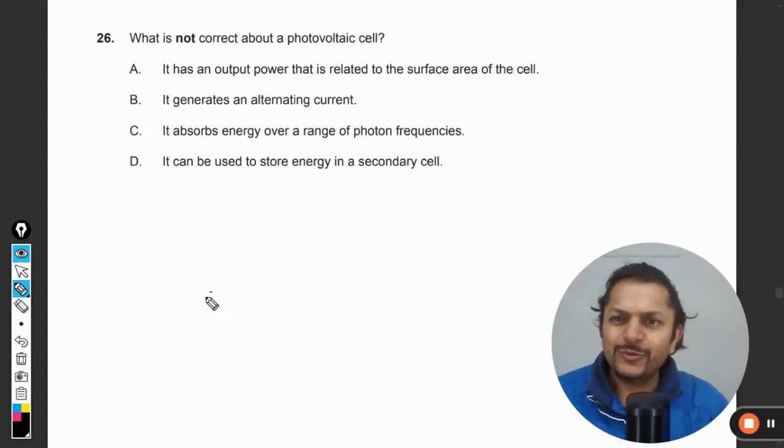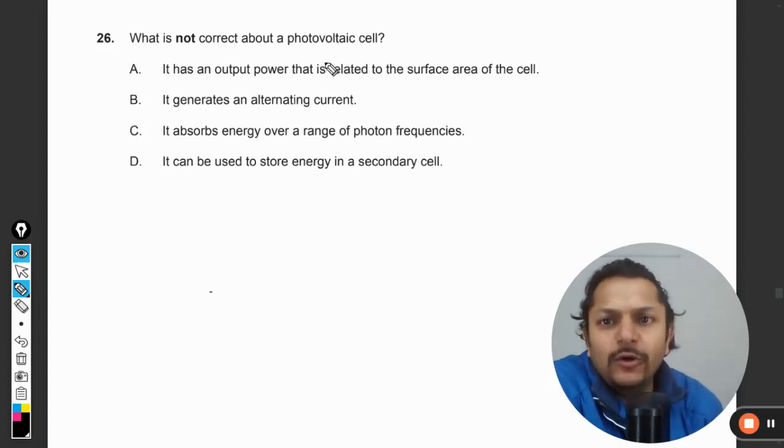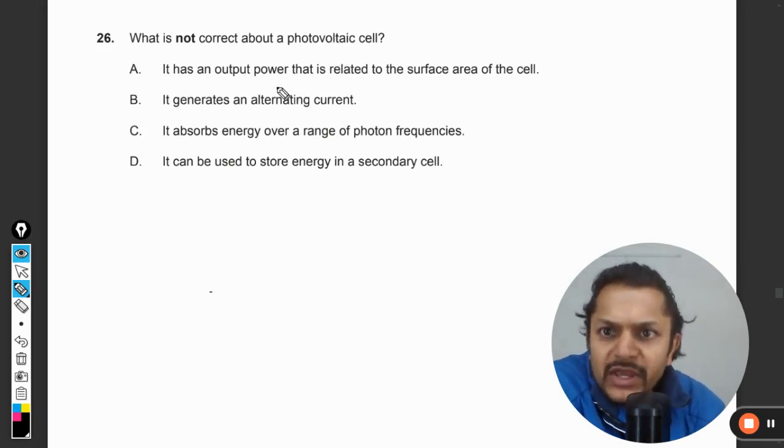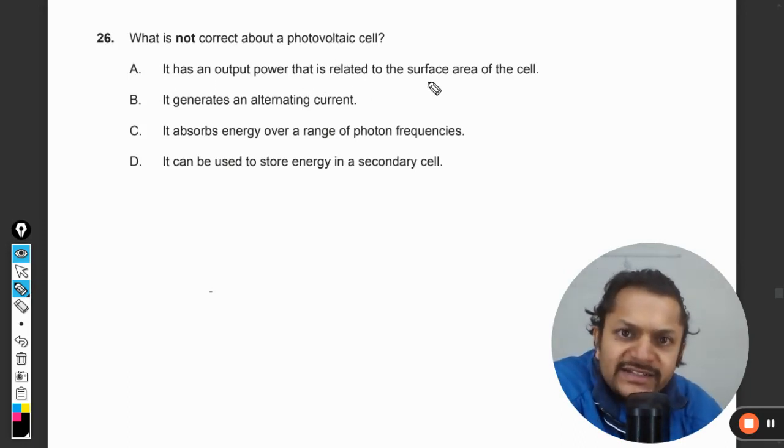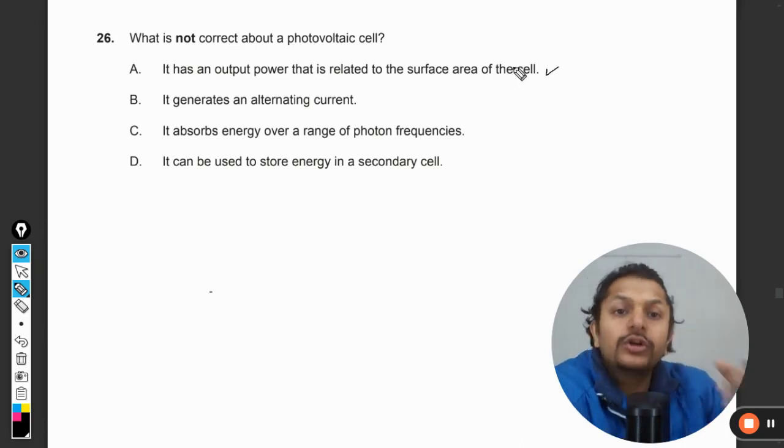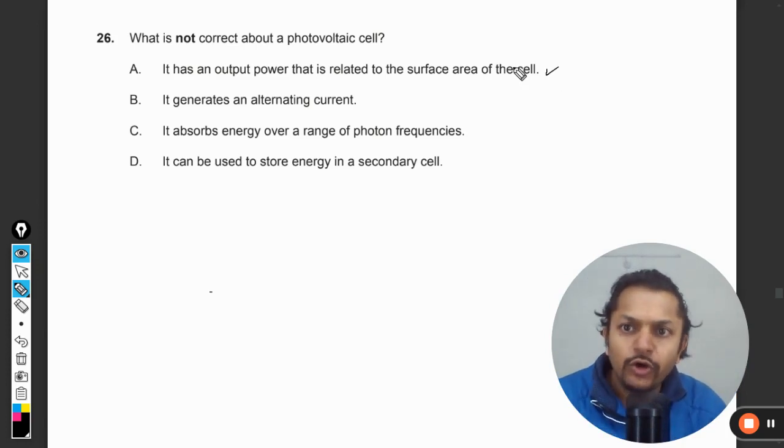Let us see what is in this question. What is not correct about a photovoltaic cell? It has an output power that is related to the surface area of the cell. Well, that is exactly correct. More area covered means more power will be produced by the solar cell, no doubt about that.